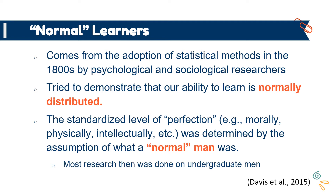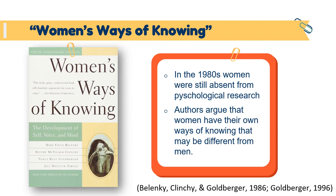In the mid-1800s, we brought this idea into psychology and sociology to look at mental qualities. The idea of a normal learner comes from this adoption of statistics — researchers were trying to demonstrate that our ability to learn is normally distributed. This standardized level of perfection, whether morally, physically, or intellectually, was determined by assumptions about what a quote-unquote normal man was. Most research at the time was done on undergraduate men. Woman's Ways of Knowing, a landmark feminist book published in the 1980s, argued that women have their own ways of knowing that may be different from those of men — and it remains a really important historical piece of work.